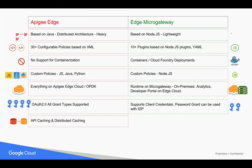Apigee Edge supports API caching and distributed caching, which is a core component of an API program when you have non-critical data you want to store at the gateway level to achieve faster performance and infinite scaling. Apigee supports distributed caching where data cached in one data center is automatically replicated to another, so clients near that data center can receive responses directly from it — very useful for retailers serving product catalog or other API response data.